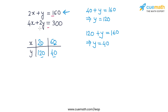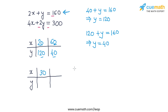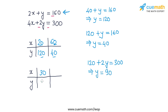Now for the second equation, 4x + 2y = 300, let's find two solutions. Taking x = 30: 4x = 120, so 120 + 2y = 300, giving y = 90. So for x = 30, y = 90 in the second equation.